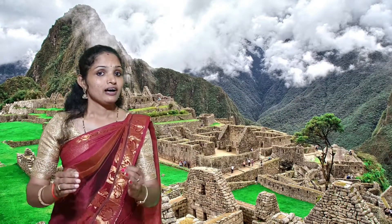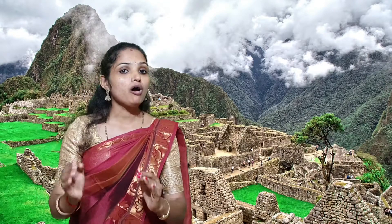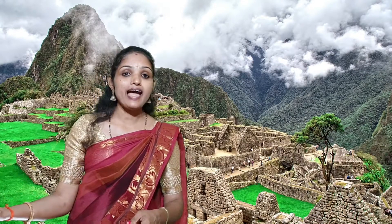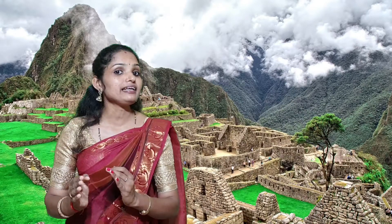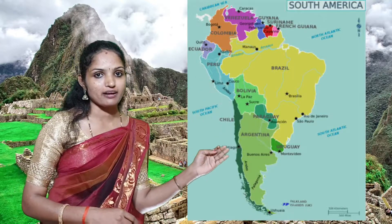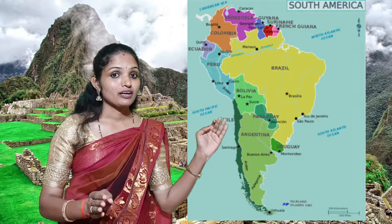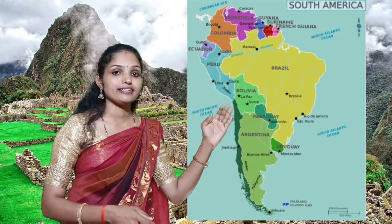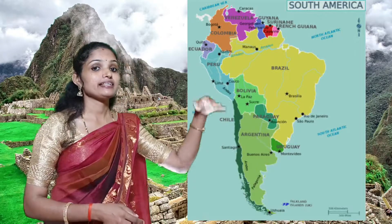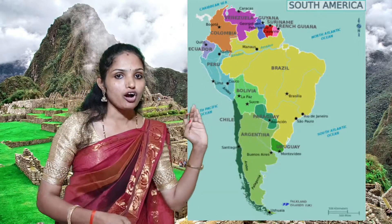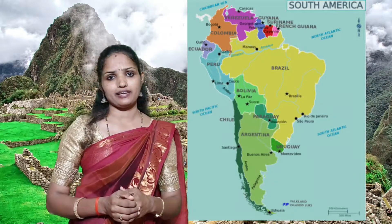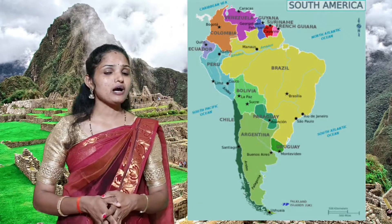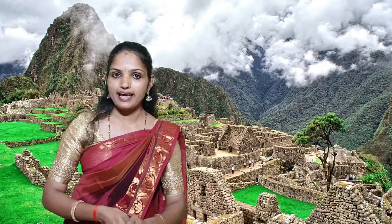South America is also called the hollow land and the land of grasslands. Why? Because the population of South America is mainly concentrated in the coastal area - most of the people are living in the coastal area. But in the center part of the continent, fewer people are living. So South America is called the hollow land.